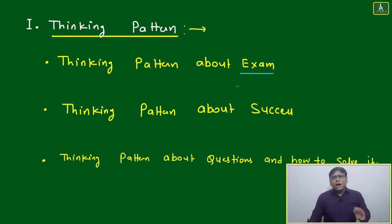Mainly three types of thinking patterns we have to change. One is about the exam - how you feel about the exam, how you think about it. You should not feel worried about whatever the market has created. CAT is portrayed as very tough - just remove everything. Personally try to realize, is CAT really tough? Next is thinking pattern about success.